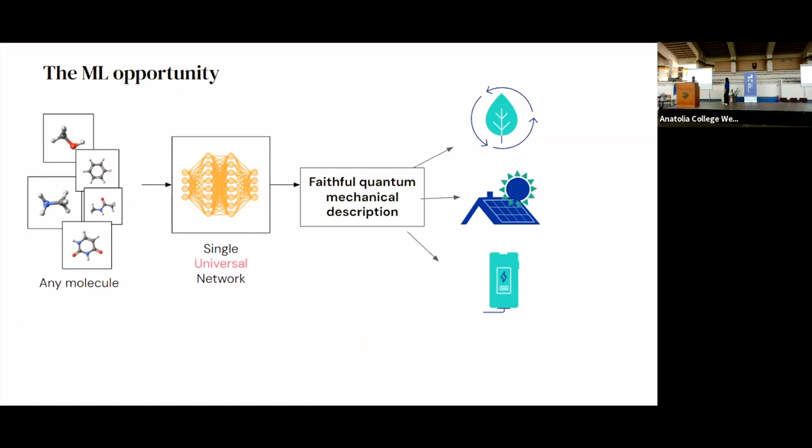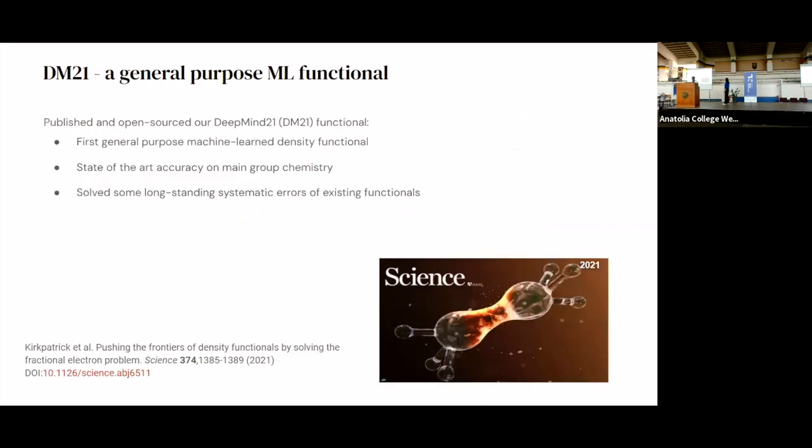And so that is essentially what we're trying to do. The idea is that we could have potentially a single universal neural network that scientists could use to feed in the density of any molecule and use that to calculate the quantum mechanic descriptors that are really relevant for applications. And we've made some progress in this area. So in 2021, we published and open sourced our first general purpose machine learned density functional and achieved state of the art accuracy across a broad range of chemistry on some of those benchmark data sets that I mentioned before. But also, and this is where collaborating with domain experts was really key, we also managed to solve some of the longstanding systematic errors of existing functionals in this space. If you want to learn a bit more about the model or anything else we did there, the links to the references at the bottom of the slide.